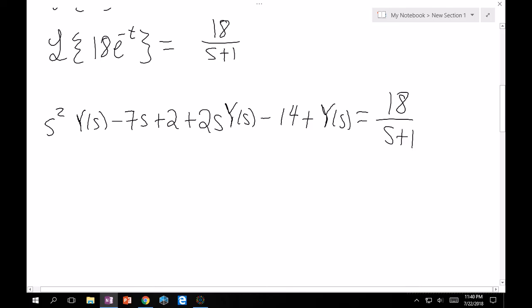Combine these four, adhering to the equation that we were initially posed. So, this is s squared Y of s minus 7s plus 2, plus 2s Y of s minus 14, plus Y of s is equal to 18 over s plus 1. Let's separate everything else out. Let's get the Y of s's together. So that's s squared plus 2s plus 1, Y of s. And then, moving the other stuff on the left-hand side to the right-hand side is going to yield 7s plus 12 plus 18 over s plus 1.